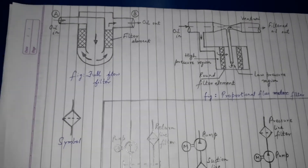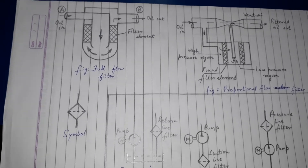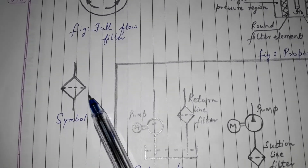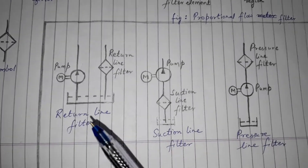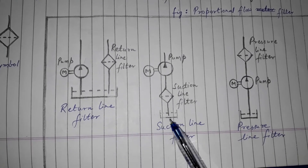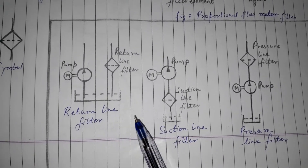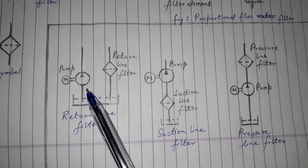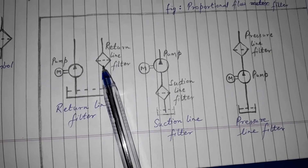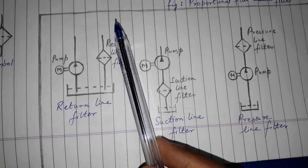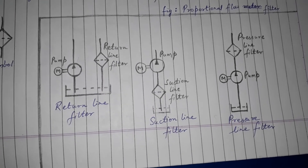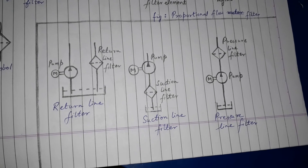Filtration material की बात करें तो felt, paper, fabric और wire mesh use होता है। यह filter का symbol है। Filter के 3 locations होते हैं: return line filter, suction line filter, और pressure line filter। Return line filter में oil pump के through system में जाता है और वापस आते वक्त return line में filter होता है — contaminants तब निकाले जाते हैं जब liquid tank की तरफ जा रहा होता है। Suction line filter pump से पहले लगा होता है।